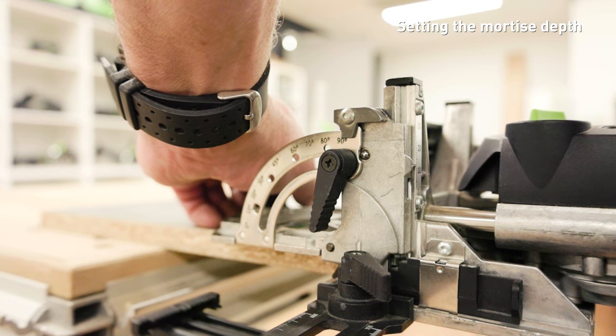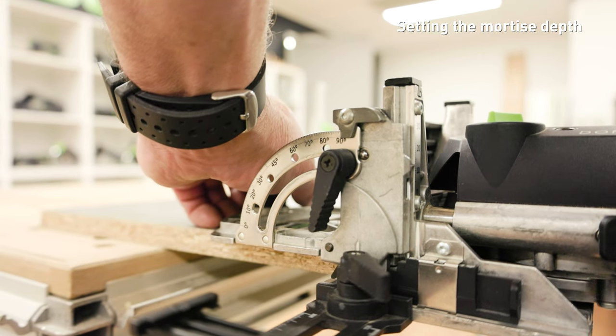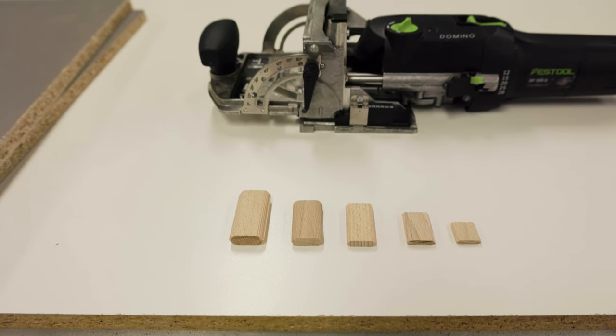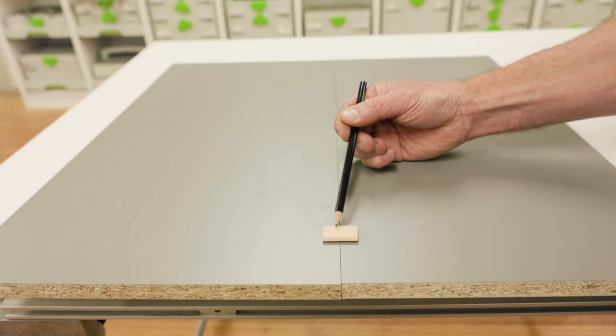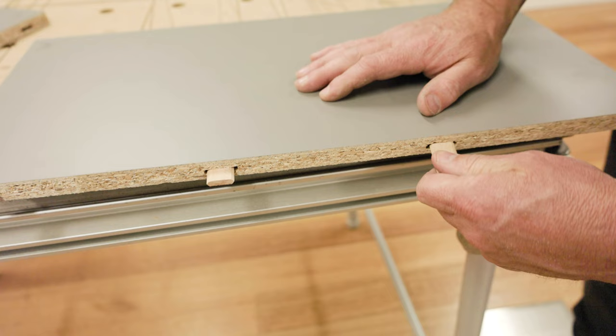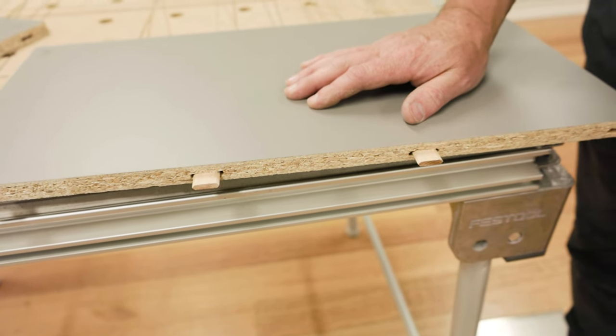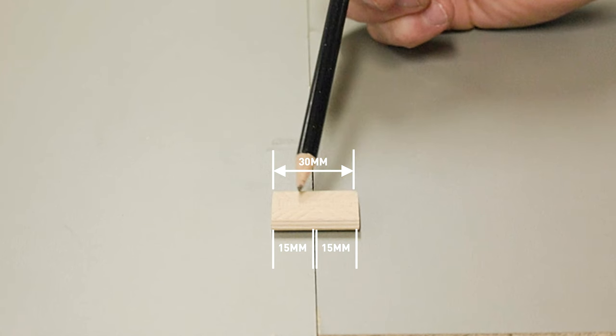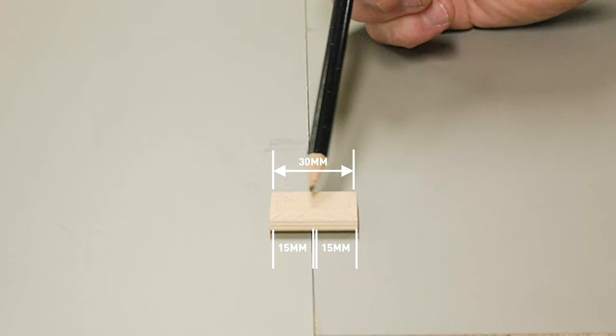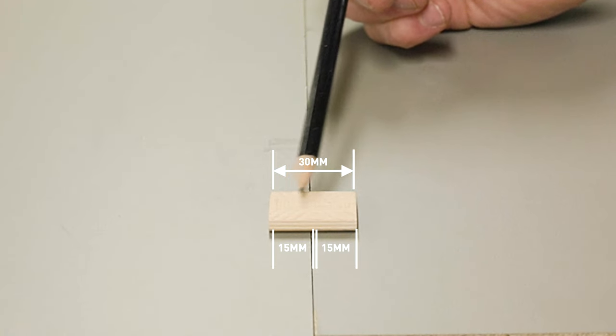The mortising depth determines how deep into the workpiece the mortising bit cuts. This needs to be adjusted for different sized tenons. In most cases, the tenons should be centred across the joint and the depth of the mortise should be half the length of the tenon. For a 5 by 30mm domino, the plunge depth would be set at 15mm to span evenly in each piece.